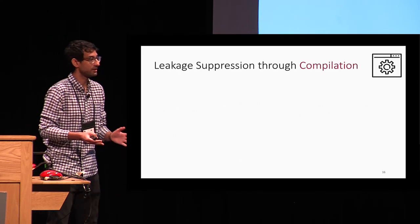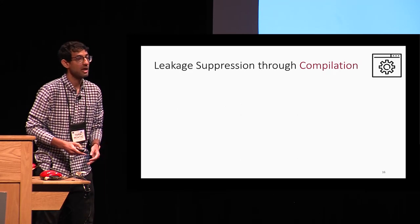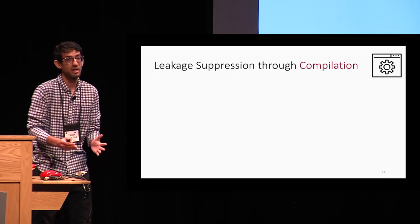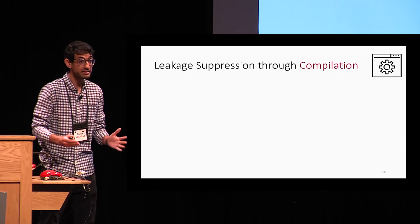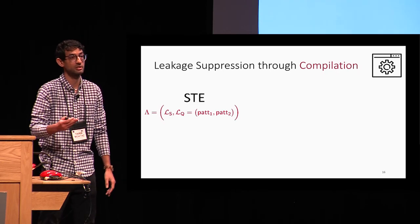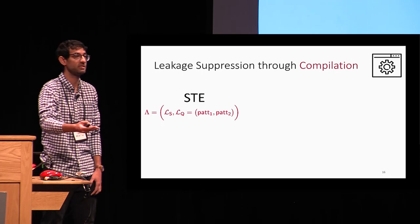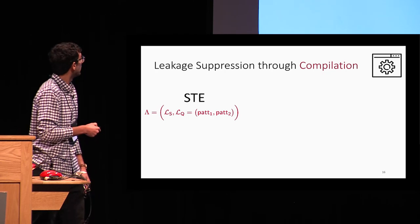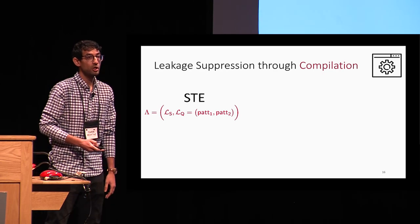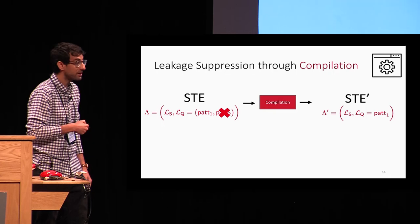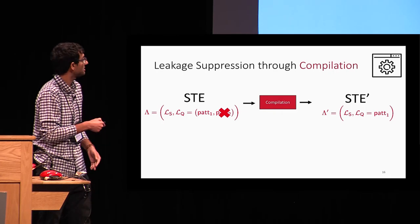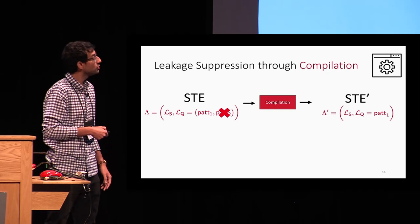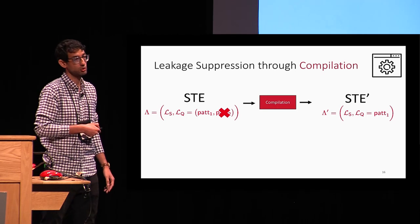Now we are ready to dive into our techniques. At a very high level, what we are proposing is a generic compiler that will suppress the leakage of any structured encryption scheme. Consider a structured encryption construction with a specific leakage profile — a setup leakage and a query leakage equal to pattern one and pattern two. The compiler suppresses a specific pattern, say pattern two, and outputs a structured encryption scheme with a new query leakage equal only to pattern one.